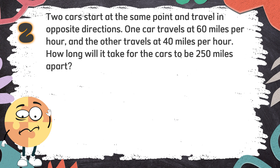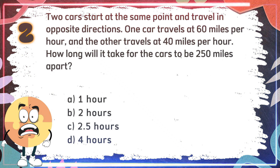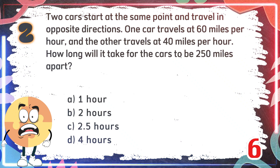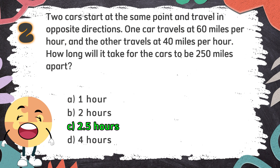Number 2: Two cars start at the same point and travel in opposite directions. One car travels at 60 miles per hour and the other travels at 40 miles per hour. How long will it take for the cars to be 250 miles apart? The choices are: A. 1 hour, B. 2 hours, C. 2.5 hours, D. 4 hours. The correct answer is C. 2.5 hours.